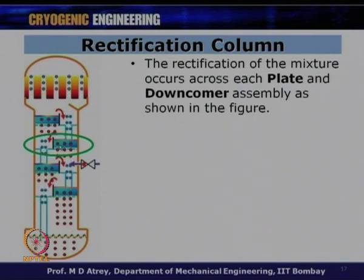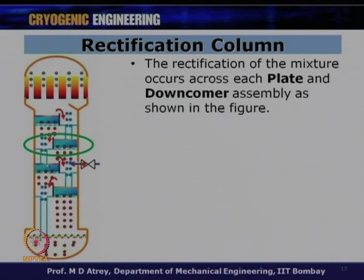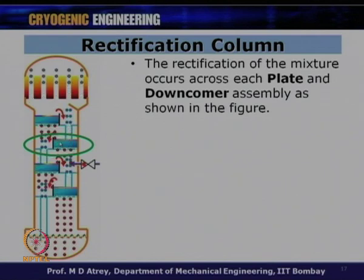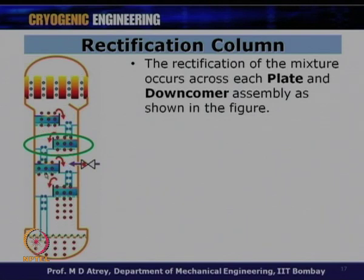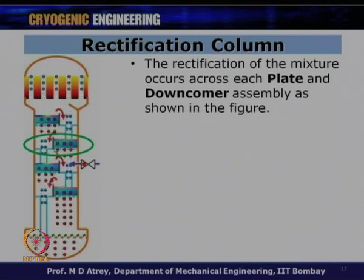Inside the column there are horizontal plates, each with a weir. When the liquid height on a plate exceeds the weir height, the liquid flows down through a downcomer to the plate below. Vapor always flows upward and liquid always flows downward — this is a counter-flow arrangement. The vapor rises through small holes at the bottom of each plate, bubbling up through the liquid on the plate above.